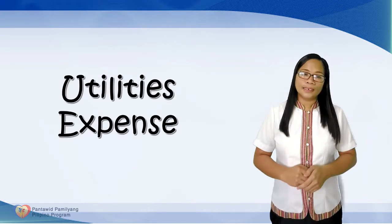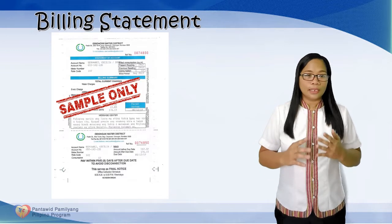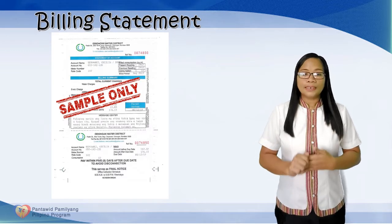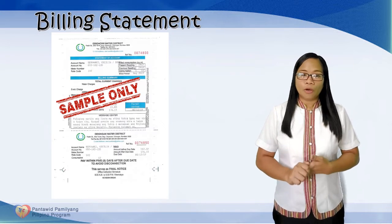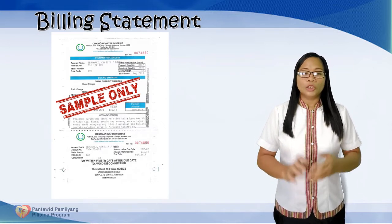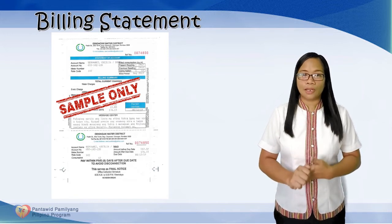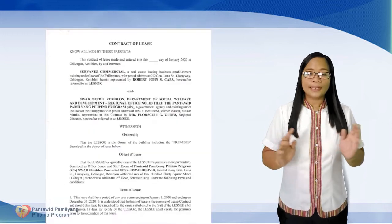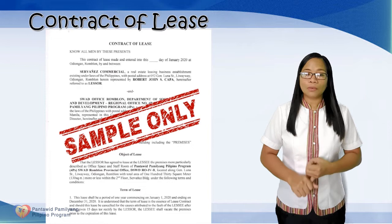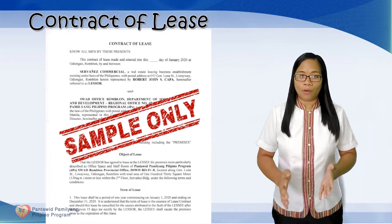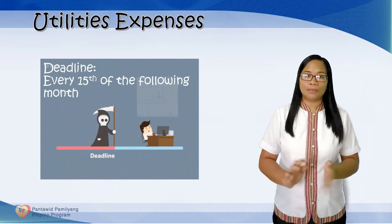For Utilities — Billing Statements for Electricity, Water, and others. Upon receipt of the Billing Statement, the Provincial Operations Office or POO should provide or send an advance copy of the Billing Statement to the Regional Office. And last, the Contract of Lease for Rentals of Office and Warehouses. Deadline for submission is every 15th of the following month.